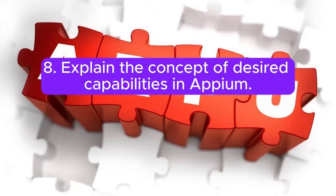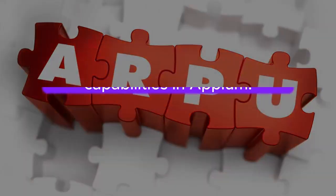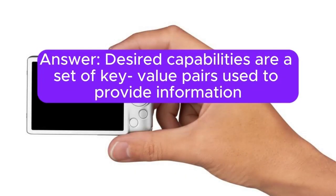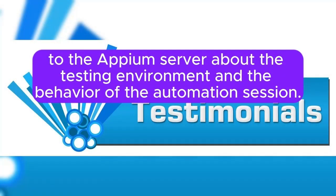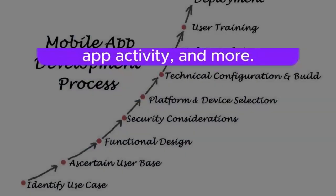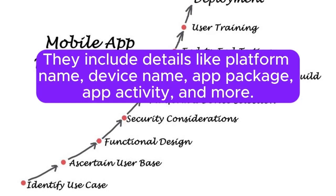8. Explain the concept of desired capabilities in Appium. Desired capabilities are a set of key-value pairs used to provide information to the Appium server about the testing environment and the behavior of the automation session. They include details like platform name, device name, app package, app activity, and more.